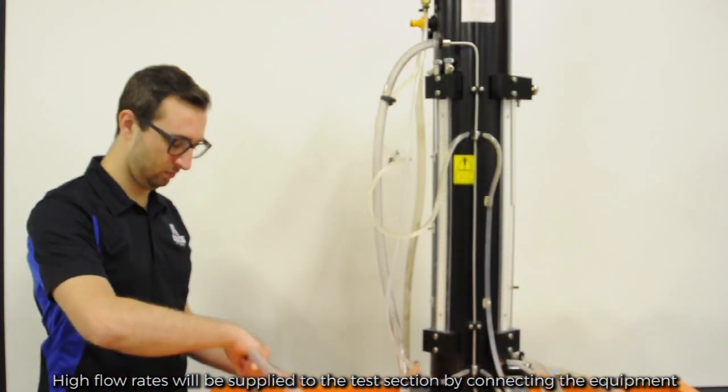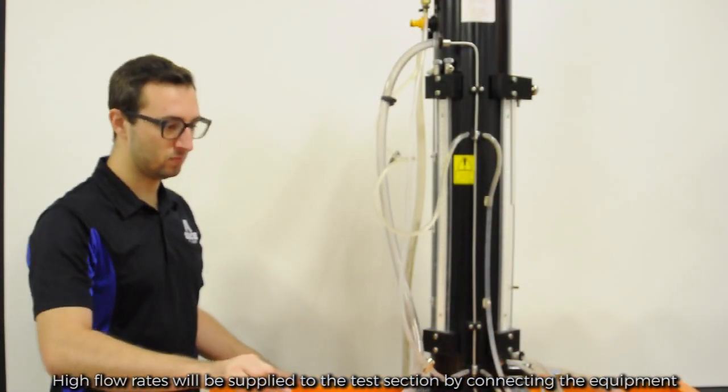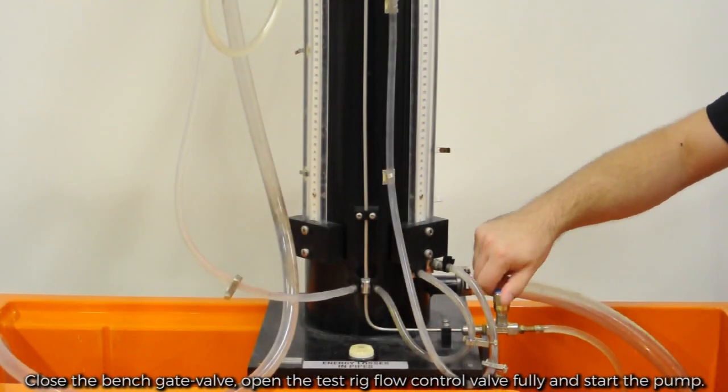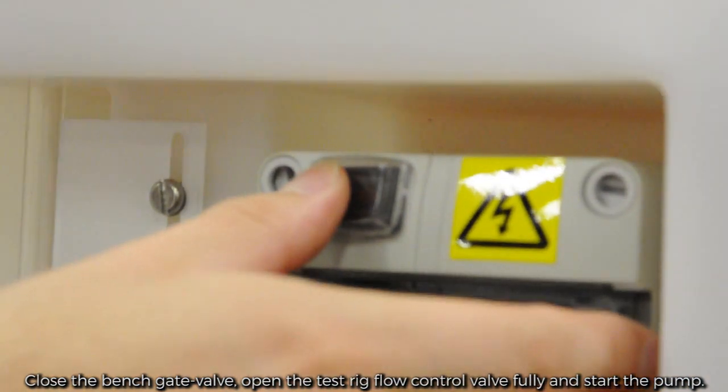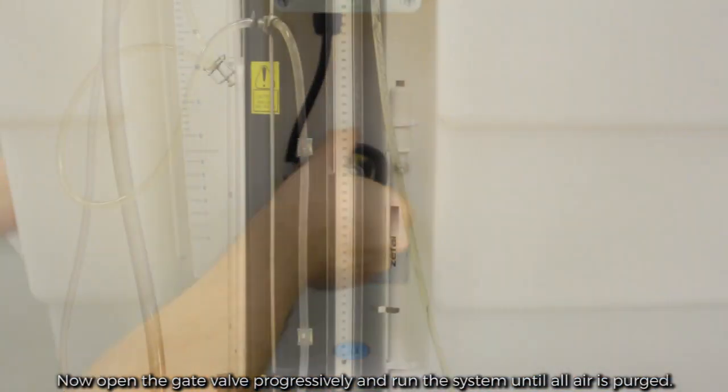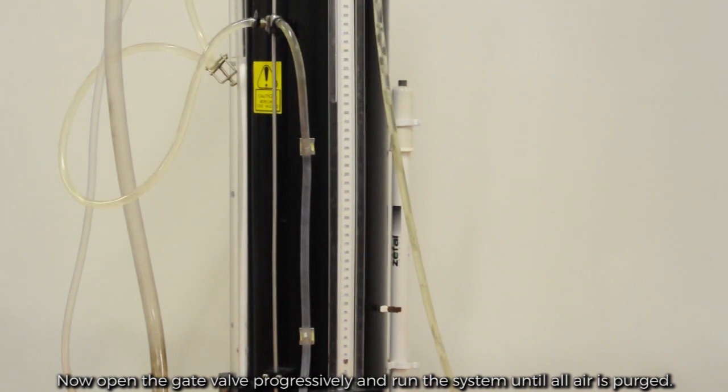High flow rates will be supplied to the test section by connecting the equipment inlet pipe to the hydraulic bench. Open the test rig flow control valve fully and start the pump. Now, open the gate valve progressively and run the system until all air is purged.